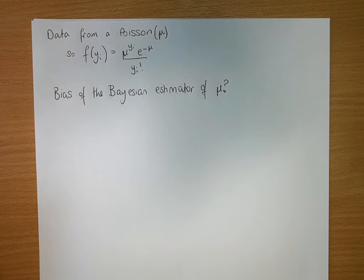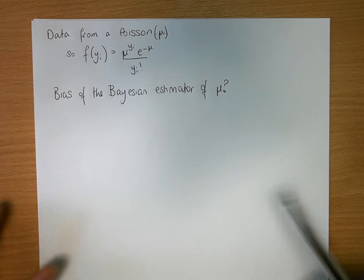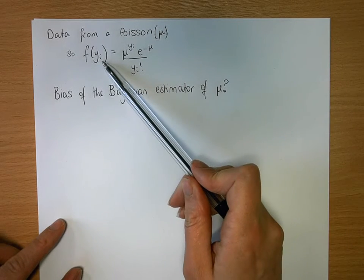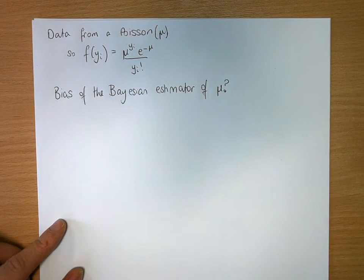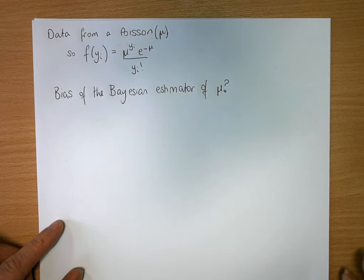So here we're looking at data that comes from a Poisson distribution. We observe our individual observations yi, and each of them come independently from a Poisson distribution that we're describing in terms of mu.